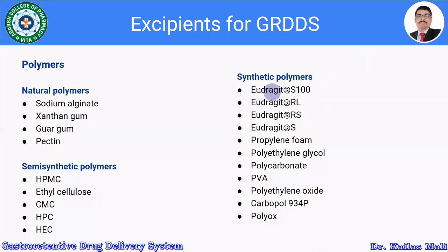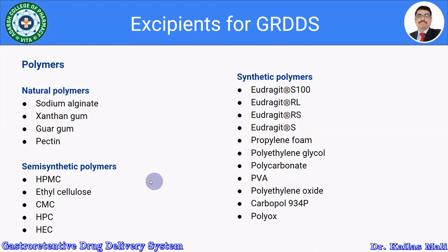From synthetic polymers, various Eudragits like Eudragit S100, Eudragit RL, Eudragit RS, then polypropylene foam, polyethylene glycol, polycarbonate, polyvinyl alcohol, polyethylene oxide, Carbopol 934P, and Polyox. These polymers are used for the design and development of various gastroretentive drug delivery systems, acting as matrix formers or mucoadhesive agents in the formulation.